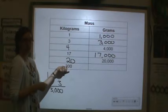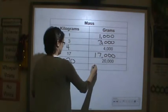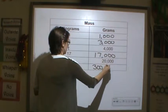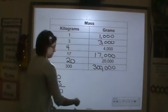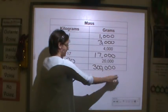300 kilograms, multiply by 1,000, is 300,000 grams.